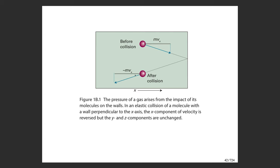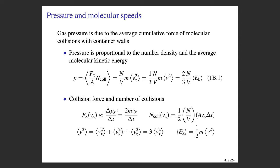Before the collision the molecule has momentum of mass times its velocity — the velocity component is positive, so the initial momentum is m·vx. After the collision, because it's elastic, the magnitude of momentum is the same but the sign is opposite. So the change in momentum is two times the mass times the velocity along the x component: Δp = 2m·vx. This is our estimate for the force a molecule exerts on the wall when it collides, and it's linearly proportional to the speed along x.